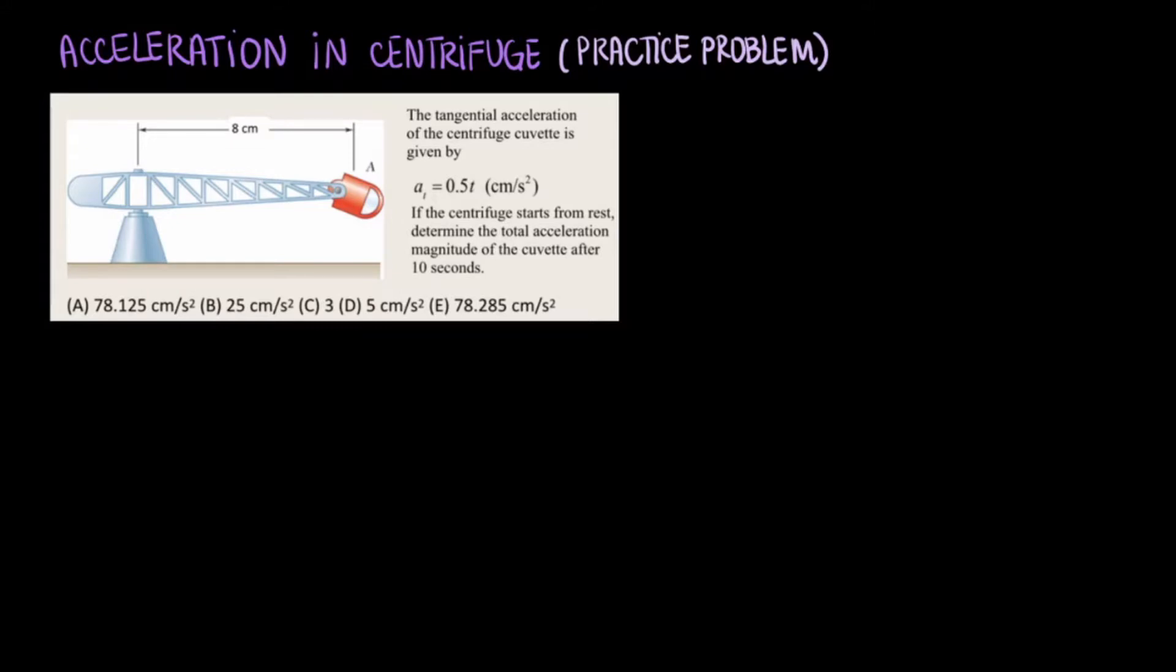The tangential acceleration of the centrifuge covet is given by AT equals 0.5 times t, the time, and that tangential acceleration is in centimeters per second squared. If the centrifuge starts from rest, determine the total acceleration magnitude of the covet after 10 seconds.